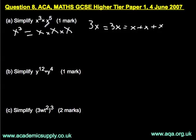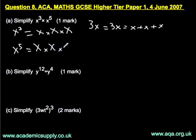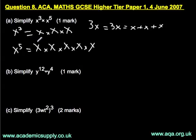Now, x to the power of 5 is the same idea. x to the power of 5 is x times x times x times x times x — five x's. You probably wouldn't need to do this, but I'm just illustrating what we're talking about.